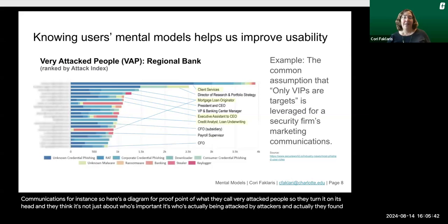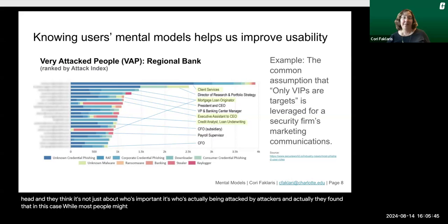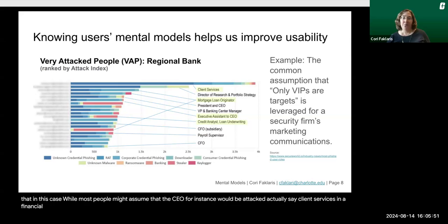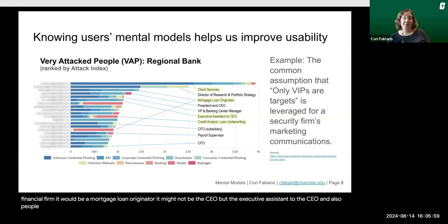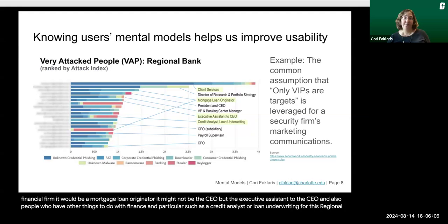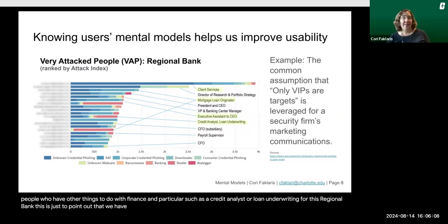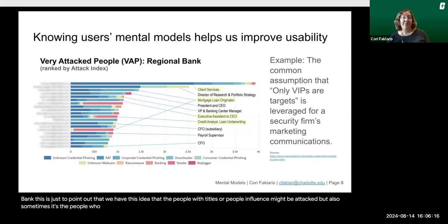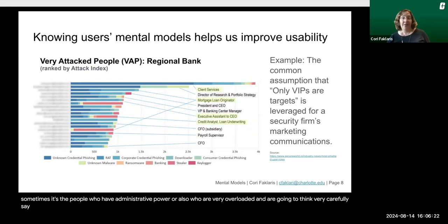Proofpoint found that while most people might assume the CEO would be attacked, in a financial firm it might actually be a mortgage loan originator in client services, or the executive assistant to the CEO, or people involved in finance such as a credit analyst or loan underwriting at a regional bank. The point is that it's not only people with important titles — sometimes it's those with administrative power, or those who are overloaded and won't think very carefully about certain emails.